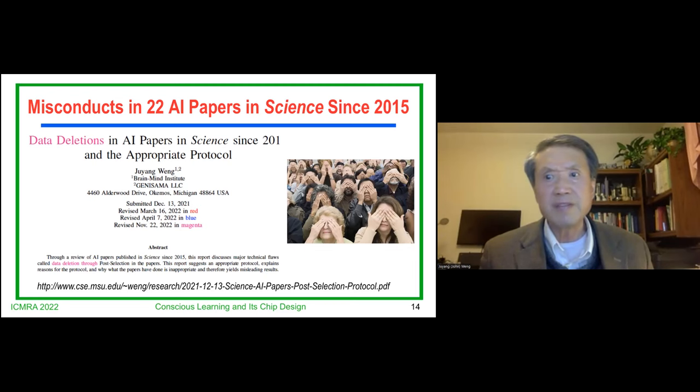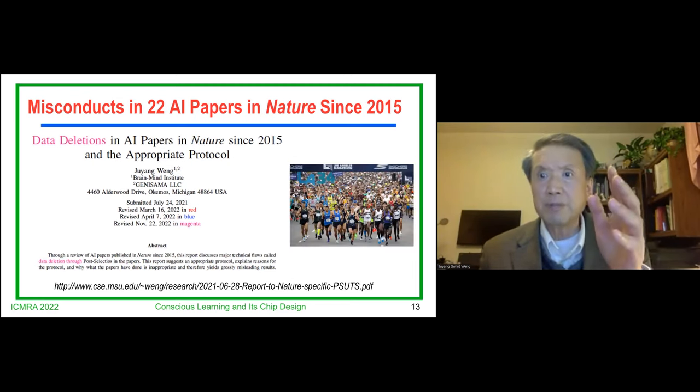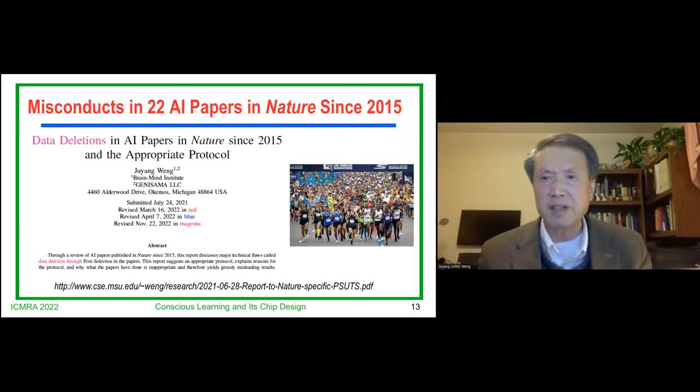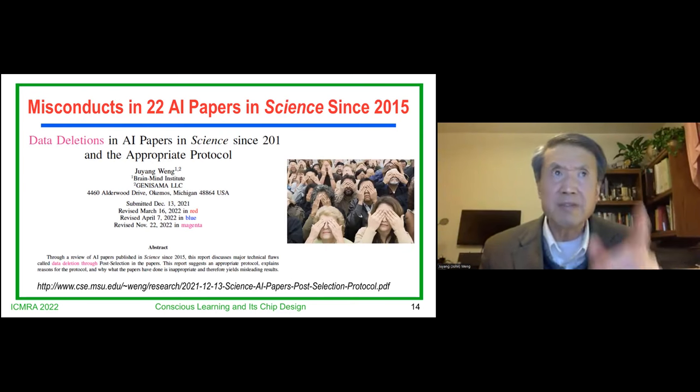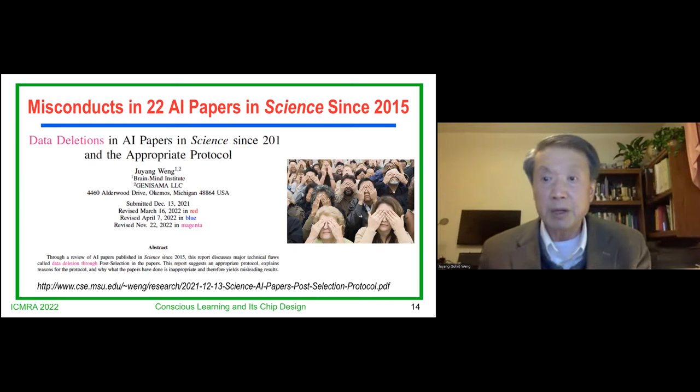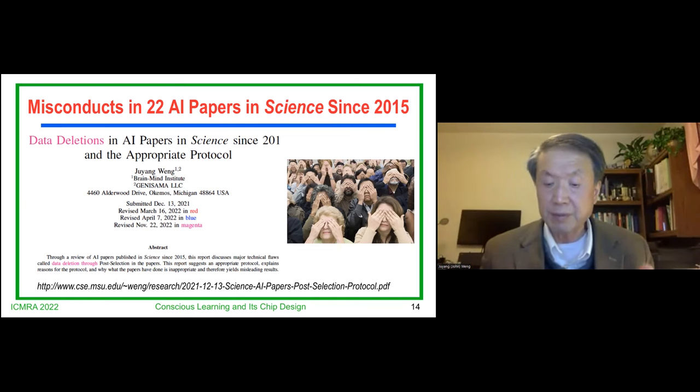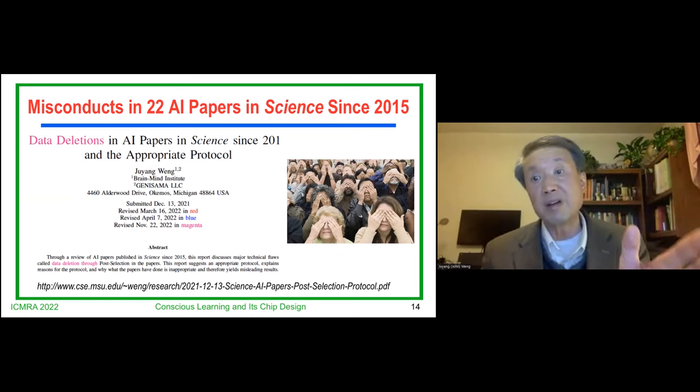Since 2015, all AI papers in nature conducted misconducts. Same thing in science. Science even did not do investigation. I submitted my report to nature. Nature investigated. About 15 papers at that time. Only four also replied. But they all missed the boat. They only talk about something that's irrelevant. They tried to use particularities to hide their misconduct.